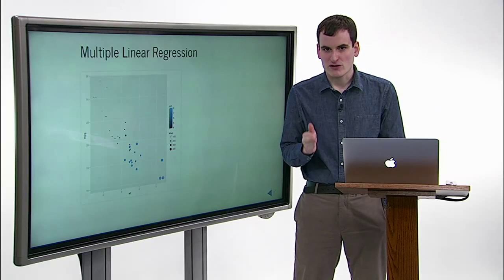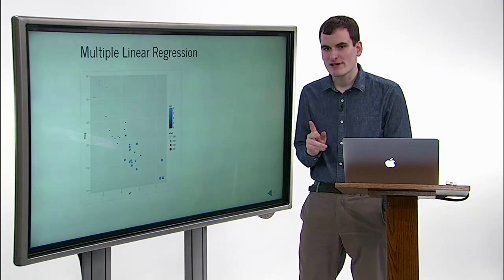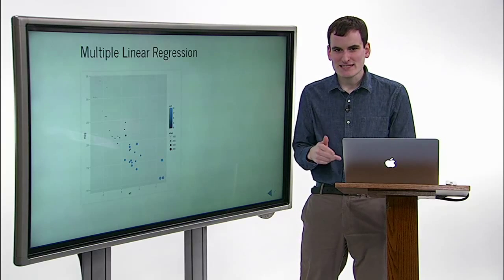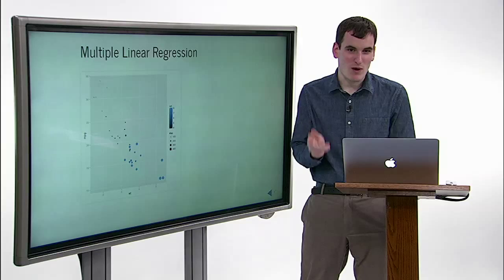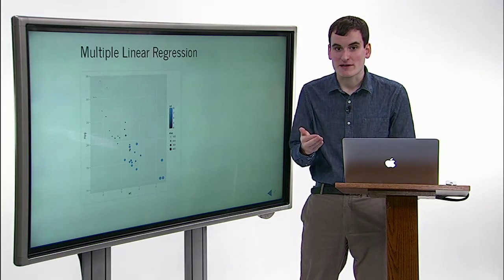We've learned to use a linear model to determine significance and make predictions. But what if you have more than one predictor variable? For instance, let's say you want to measure the effect of not just weight, but also the number of cylinders and the volume, or displacement, of the engine.